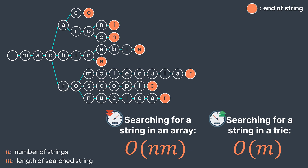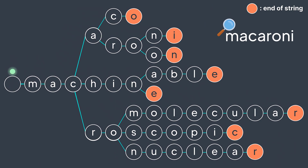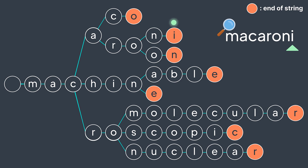For example, if we search for Macaroni in this trie, we start from the root and go down in the tree: M, A, C, A, R, O, N, I. And I is an end-of-word marker, so we found it without comparing it with all the words.